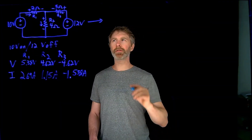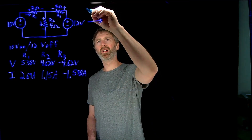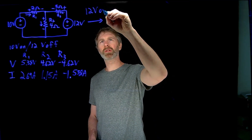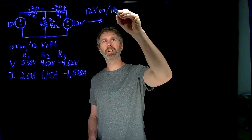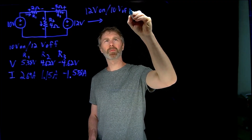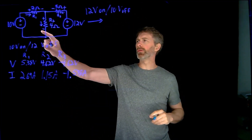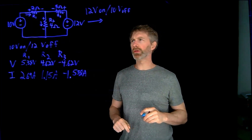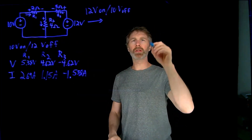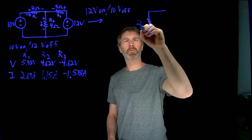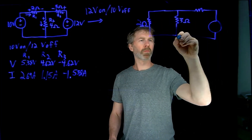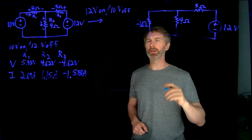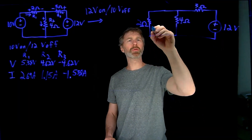Now let's look at the second half of the superposition, where the 12-volt source is on and the 10-volt source is off. The 10-volt source dialed down to zero becomes a short circuit, and I can redraw the circuit accordingly.